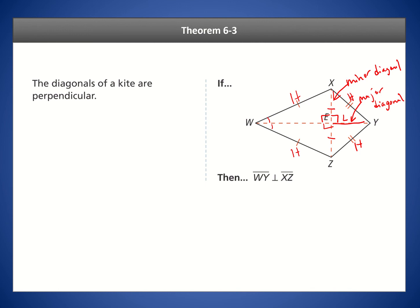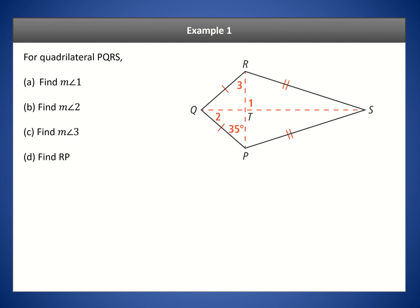There are a lot of properties going on with this kite. Now let's look at the first example: for quadrilateral PQRS, find angle 1. We know that when the diagonals cross they form a right angle, therefore angle 1 has to be 90 degrees.